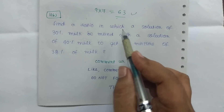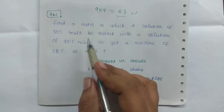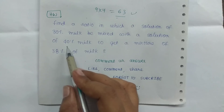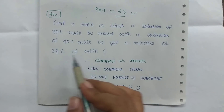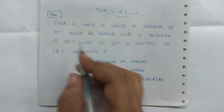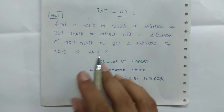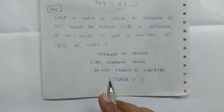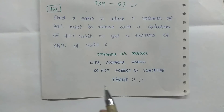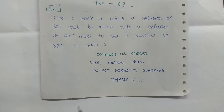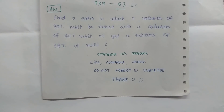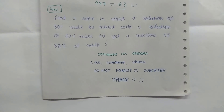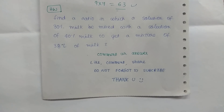Find the ratio in which a solution of 30% milk be mixed with a solution of 40% milk to get a mixture of 38% milk. 30%, 40%, 38%. Thank you.